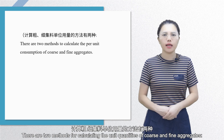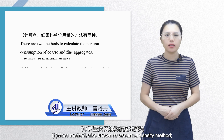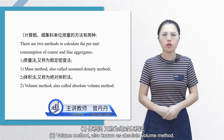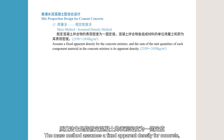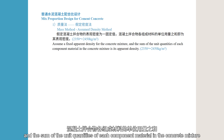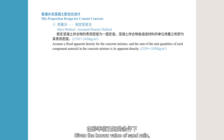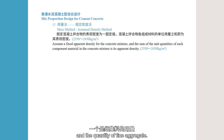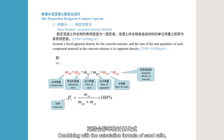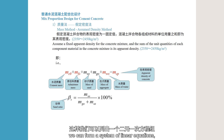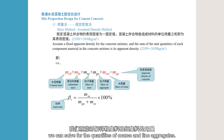There are two methods for calculating the unit quantities of coarse and fine aggregates. 1. Mass method, also known as assumed density method. The mass method assumes a fixed apparent density for concrete, and the sum of the unit quantities of each component material in the concrete mixture equals its apparent density. We already have the unit water content and the quantity of cementitious materials. Given the known value of sand ratio, there are only two unknowns: the quantity of coarse aggregate and the quantity of fine aggregate. Combining with the calculation formula of sand ratio, as shown in the figure, we can form a system of linear equations and solve for the quantities of coarse and fine aggregates.